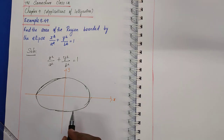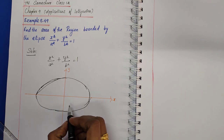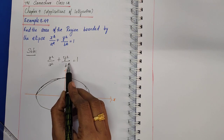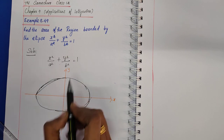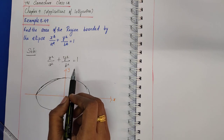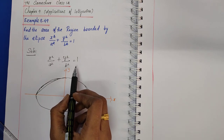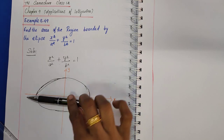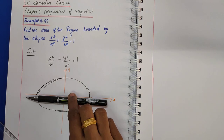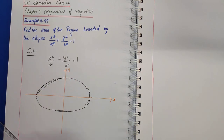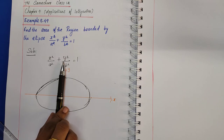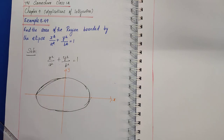The ellipse is of the form x²/a² + y²/b² = 1. This curve is symmetrical about both axes — it is split into two equal parts by the x-axis and also by the y-axis.